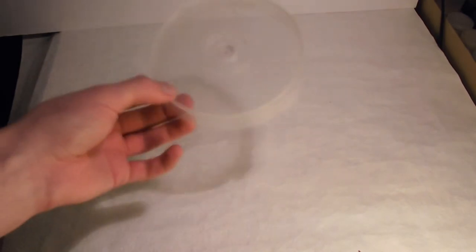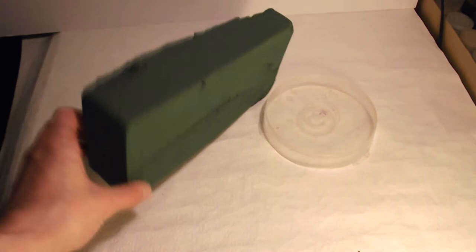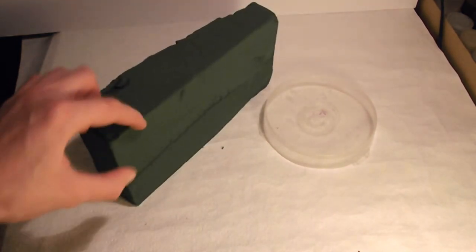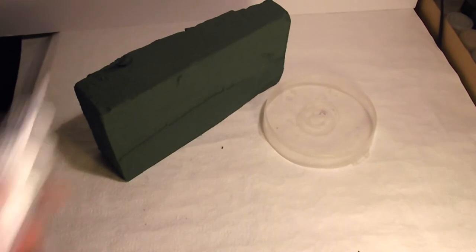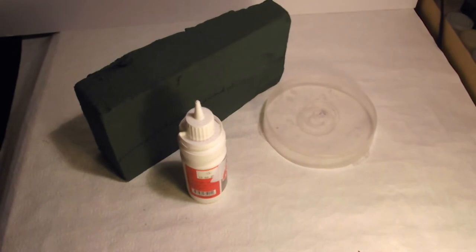Hello guys, today we are not building any models. I just show you how to make a simple base for your miniatures or small kits. We're gonna need a CD case and floristic oasis. You could use styrofoam instead, but I choose oasis because it is flexible. Also, we're going to need a lot of white glue.